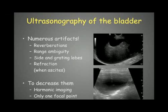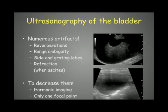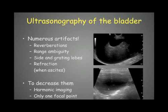We also have range ambiguity artifacts, like we can see here, that create very abnormal images within the bladder lumen. This generally occurs when the bladder is very distended with urine and when we use multiple focal points — we will see this artifact appear. Then we have the side and grating lobes that create a hypoechoic appearance in the dorsal aspect of the bladder. This is also an artifact and we shouldn't think that this is sediment or pathology in the bladder.